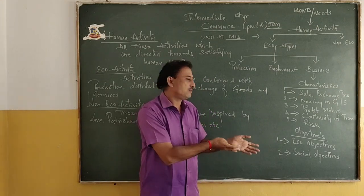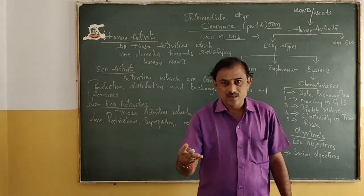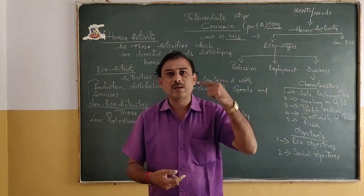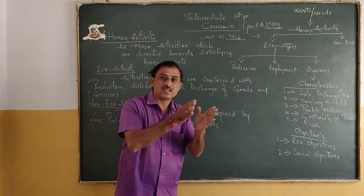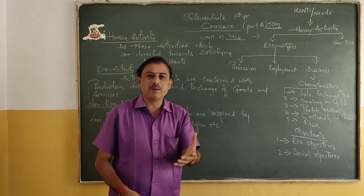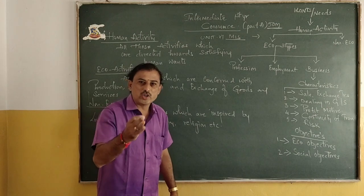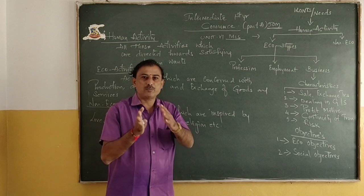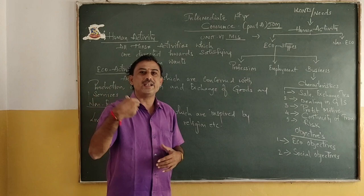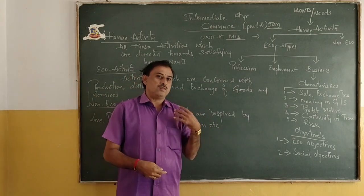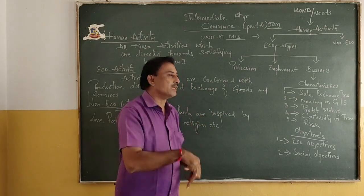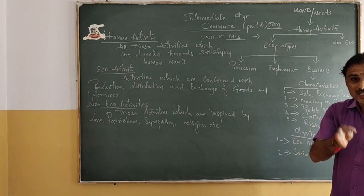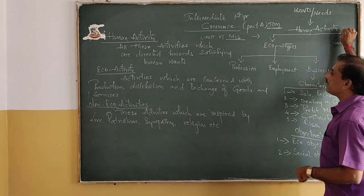Take a student — a student is always busy studying because he is preparing the subject so that tomorrow when exams are conducted, he should be scoring maximum marks. That means your motive behind learning the subject is showing or proving yourself as a perfect person in the subject. A student gets marks in return, whereas other people who discharge duties get money in return to satisfy their wants or needs. Those activities which you undertake to satisfy your wants and needs — we call them human activity.